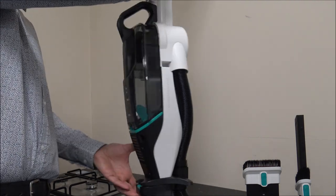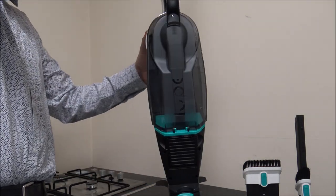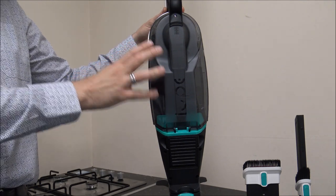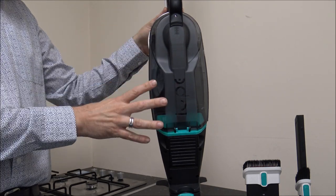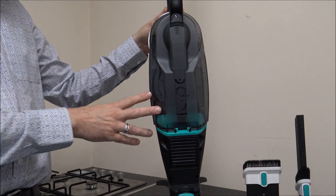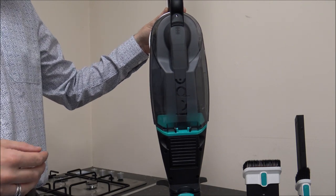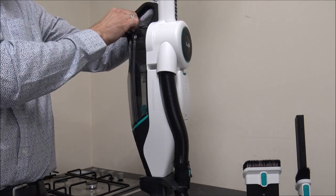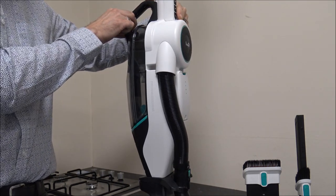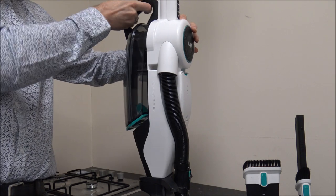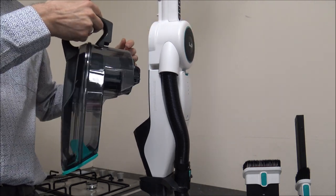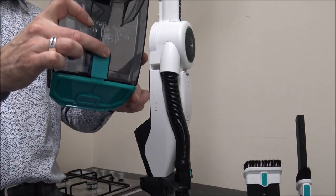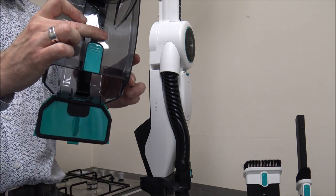I'll just turn it around and show you the bin around the back. As I mentioned earlier, it has a one liter capacity, which is absolutely fantastic. It means you can do a lot of vacuuming before you need to empty it. And to actually empty the bin, you've got a little button at the top here. So all you do is press that, and then the bin releases around the back. And then when you want to empty it, you just press that button there, and then it will actually drop down.